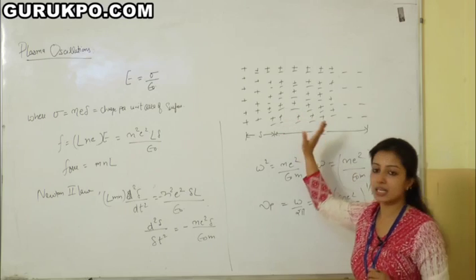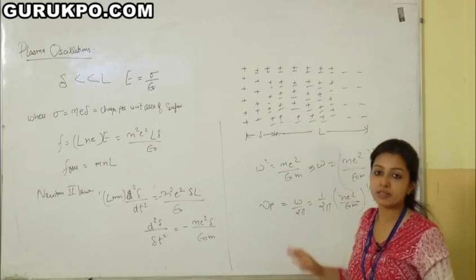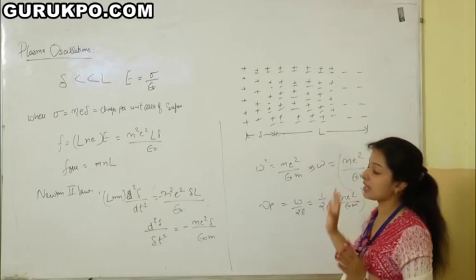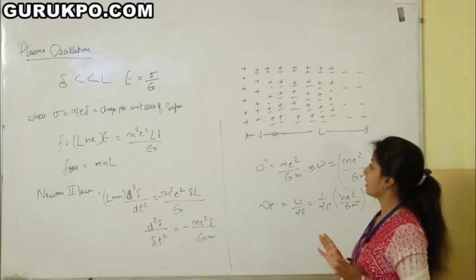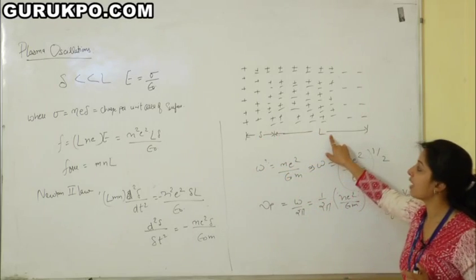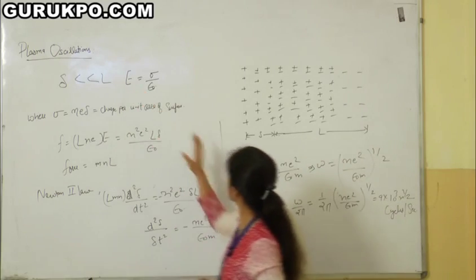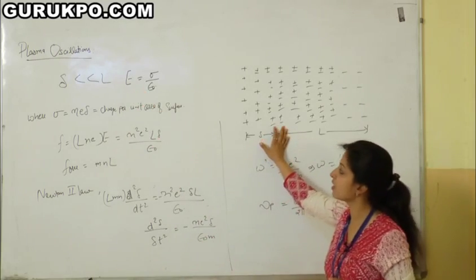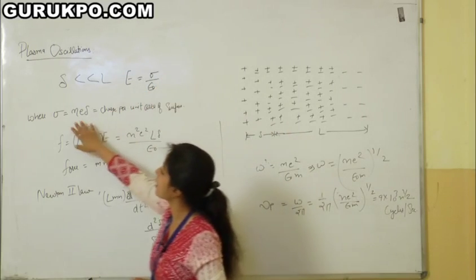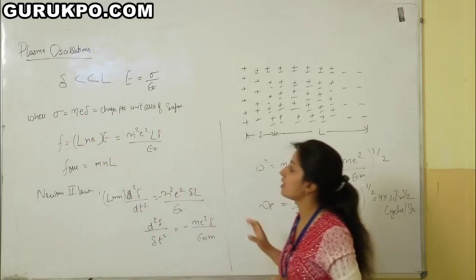The ions and electrons are collectively displaced relative to each other, with displacement del being less than l, where l is the thickness of the plasma. The electric field produced in the plasma due to the charges is E equals sigma upon epsilon naught, where sigma equals n·e·del, that is charge per unit area of the surface.